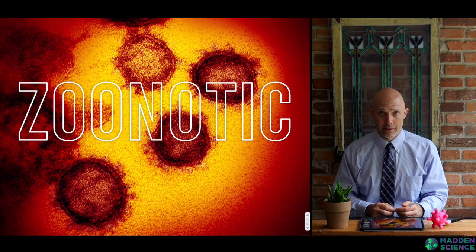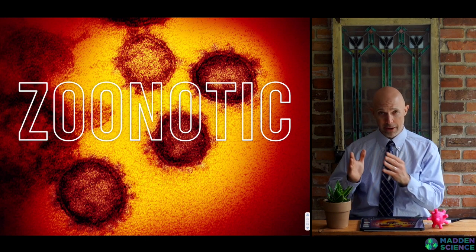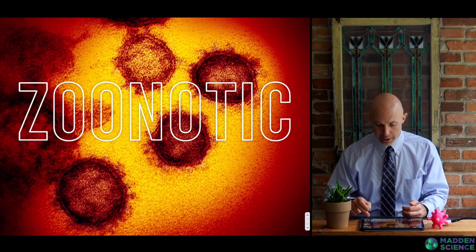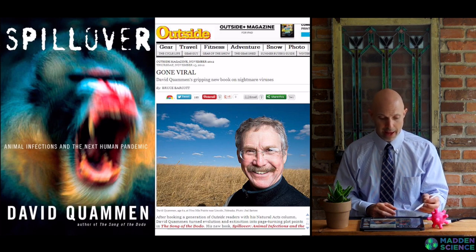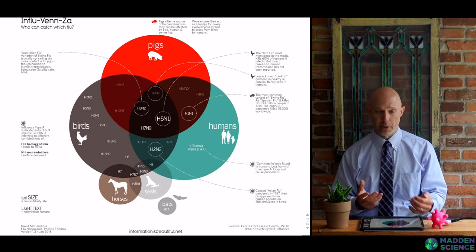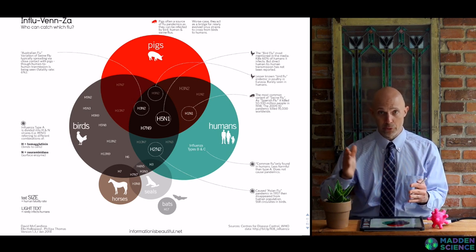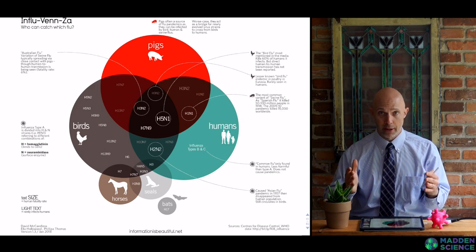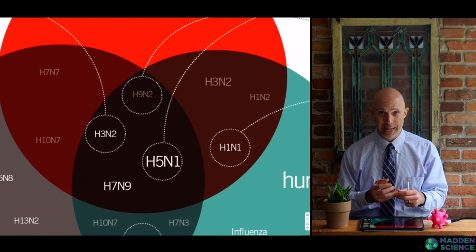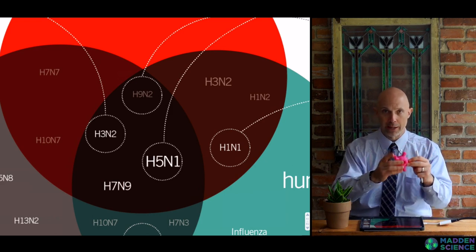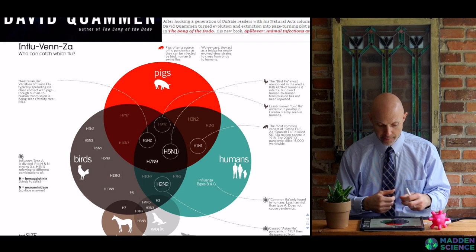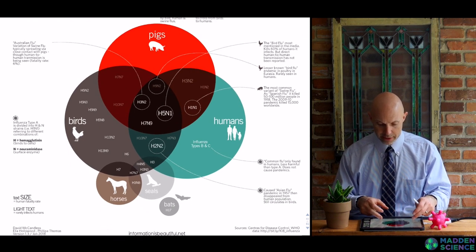The idea of zoonotic viruses: 'zoo' meaning animal, so these are animal viruses able to make the jump from their original host to human beings. David Quammen's Fresh Air interview and his book 'Spillover' are excellent, as is his TED talk. Influenza is one of the major players crossing the barrier between animal and human. From swine flu, the H and N designations stand for hemagglutinin and neuraminidase, describing the protein coat on the outside. Similarly to influenza viruses, coronaviruses can be transmitted from birds or bats.